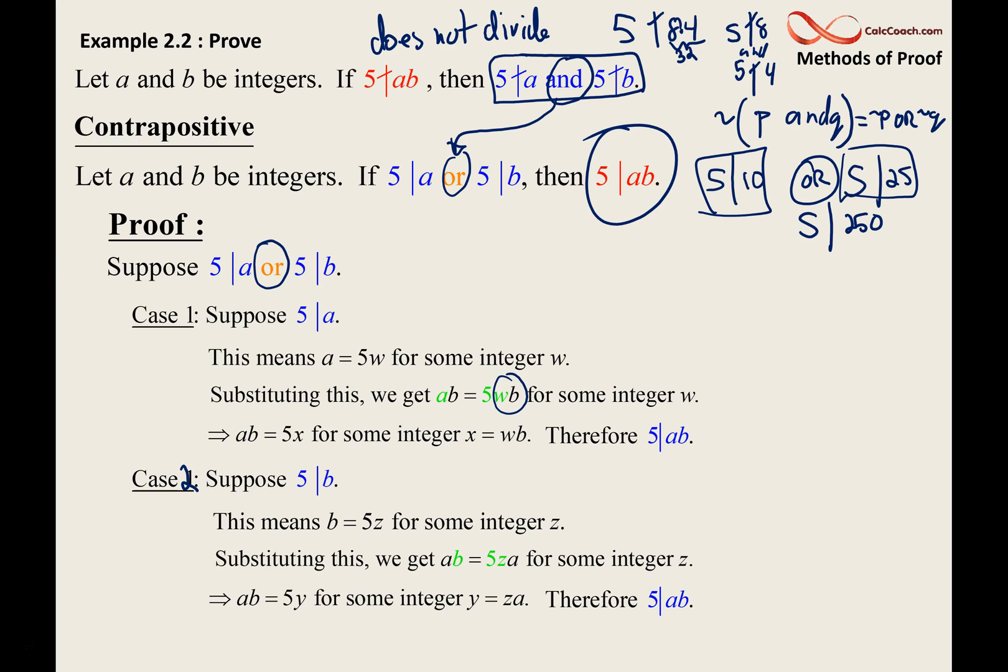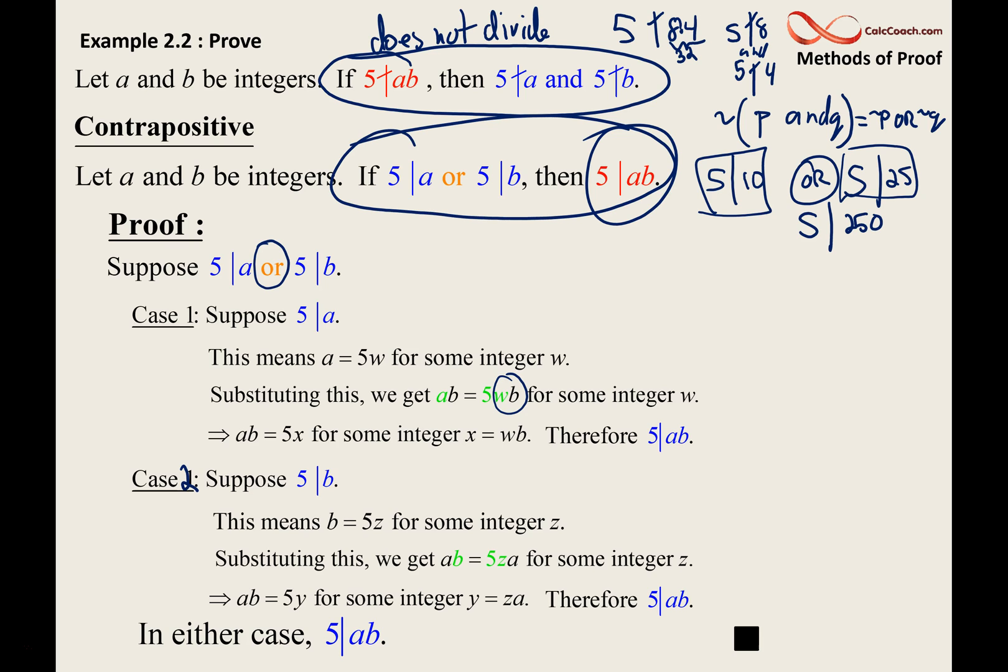For an 'or' to be true, you have to have one of them true. We just showed that if either one of them is true, we can get to our conclusion. So we're done. Be on the lookout when you have an 'or,' cut the 'or' into cases and show that both sides of the 'or' lead to your conclusion. The conclusion is that 5 divides ab. So we've proven the contrapositive. Therefore, we have proven the original statement. Don't forget the big picture is that you were asked to prove something else, but they are equivalent to each other. So you've proven the equivalent means that you've proved the original.